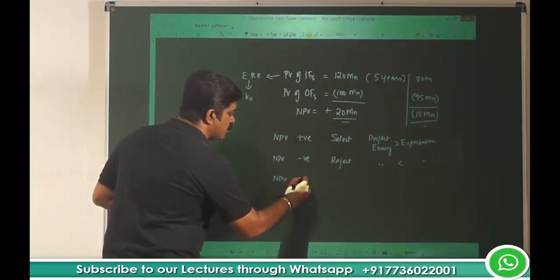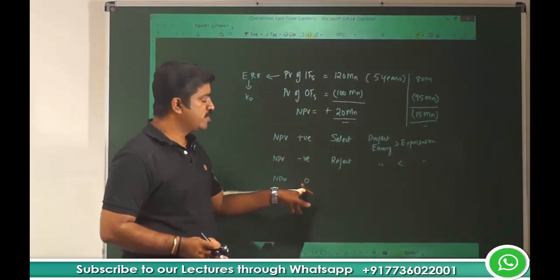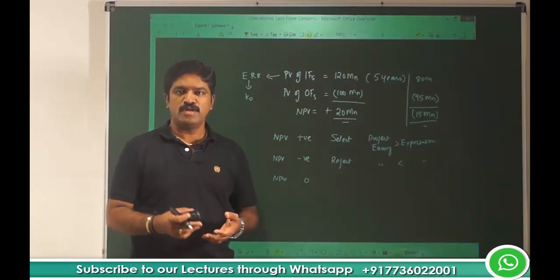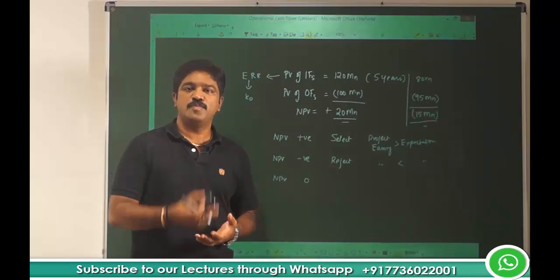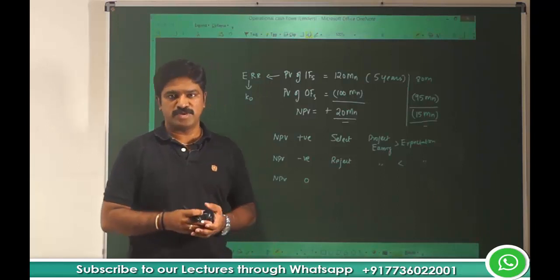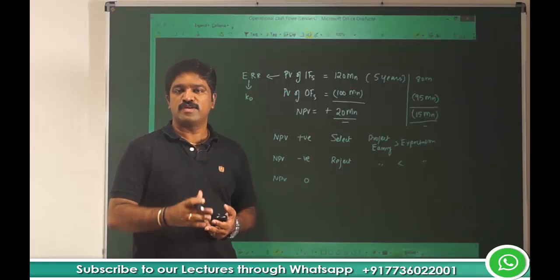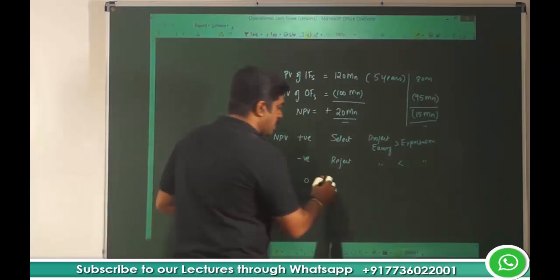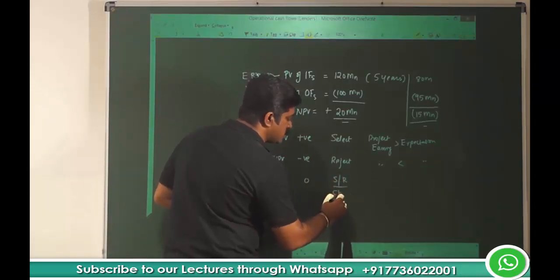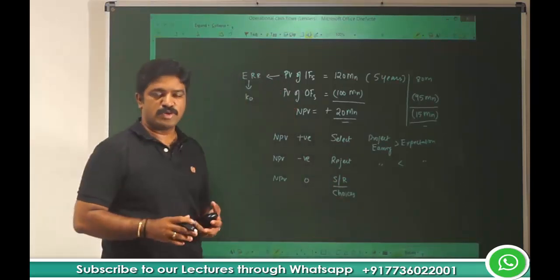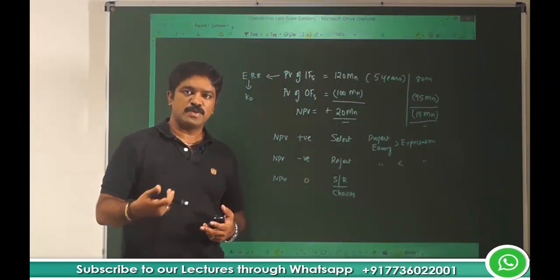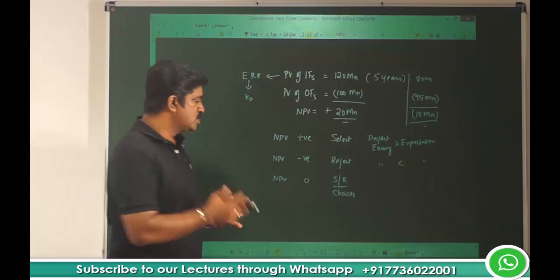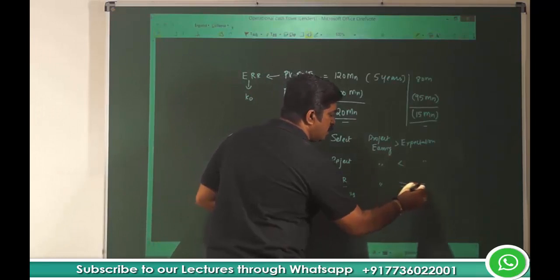What do we do if NPV is equal to zero? If it is positive we select; if it is negative we reject. If it is zero, it is a scenario where the project is earning exactly equal to your expectation. You can very well select it, or if you have other projects in front of you giving positive NPV and this project is giving zero NPV, then you can go ahead with the positive NPV projects. But if you have only one project and its NPV is zero, you can select it because it earns exactly what you expected. So it can be either select or reject depending upon the choices available — the other projects will add more wealth to the shareholders.